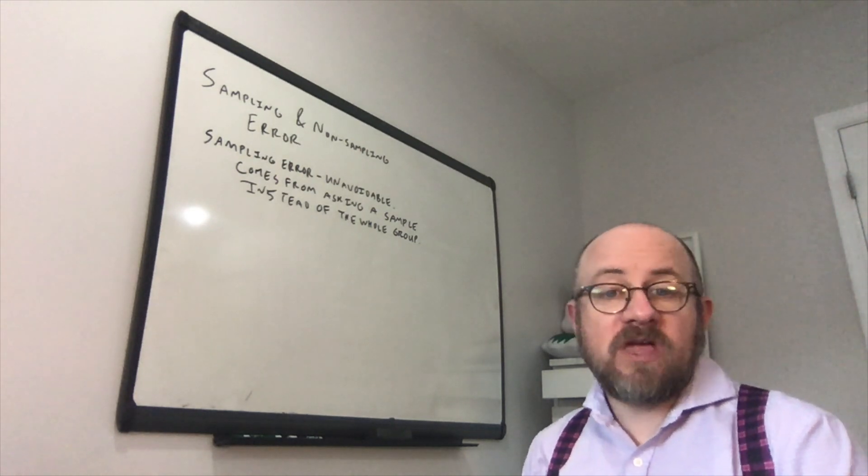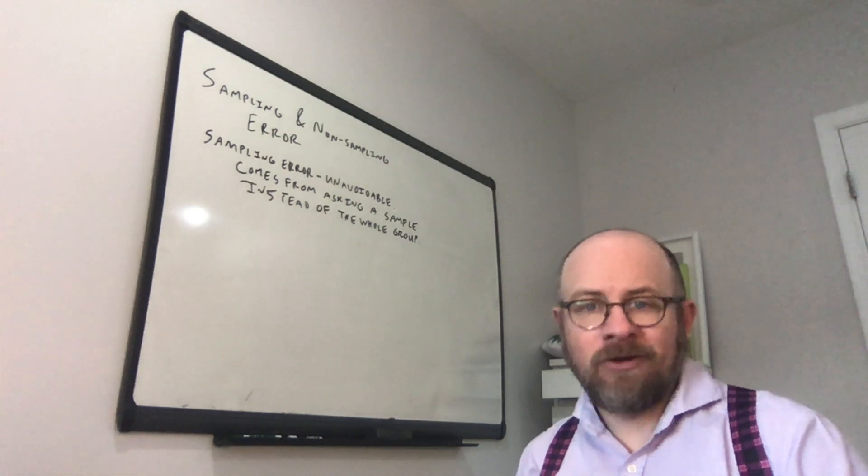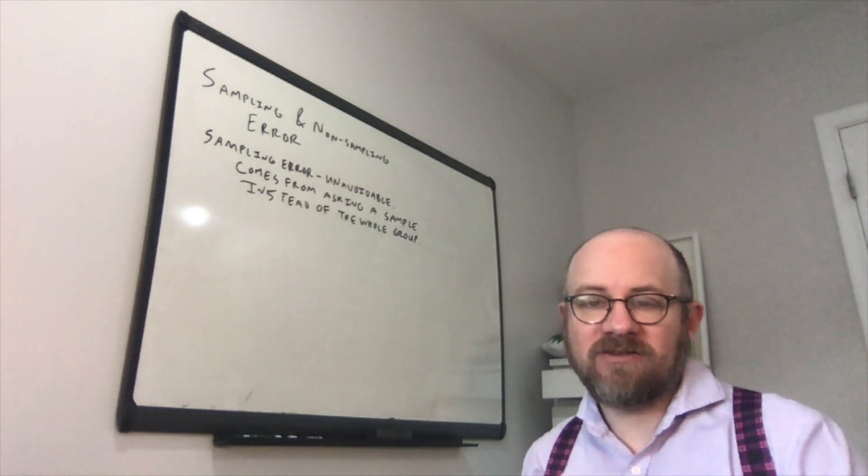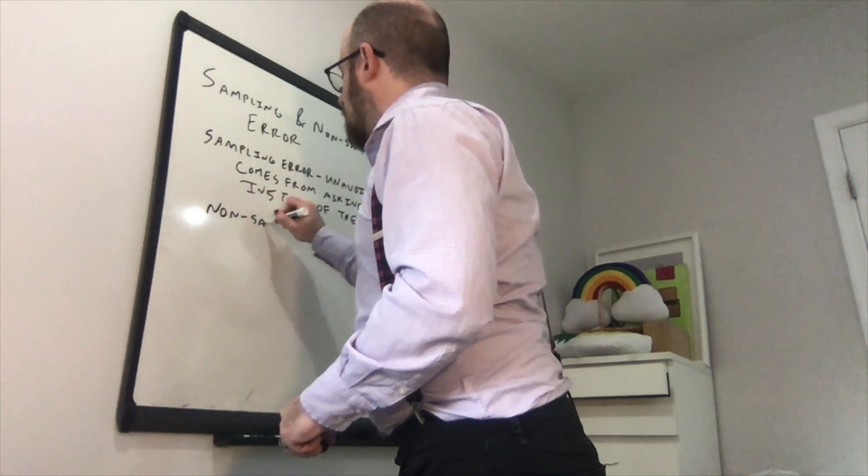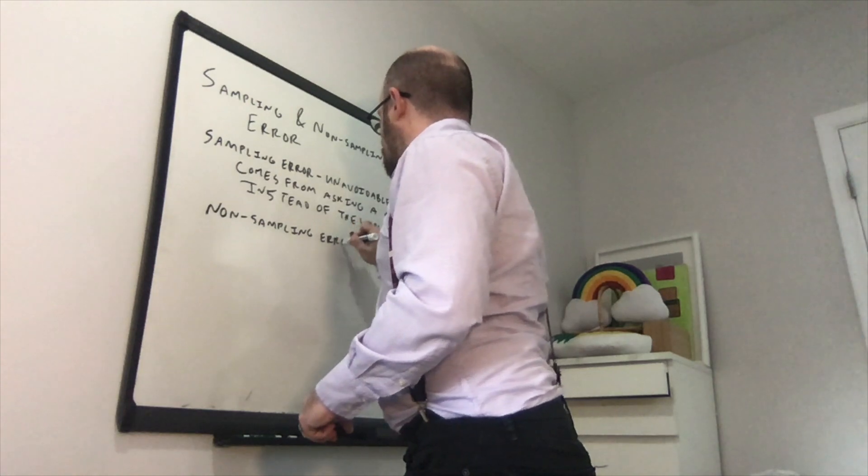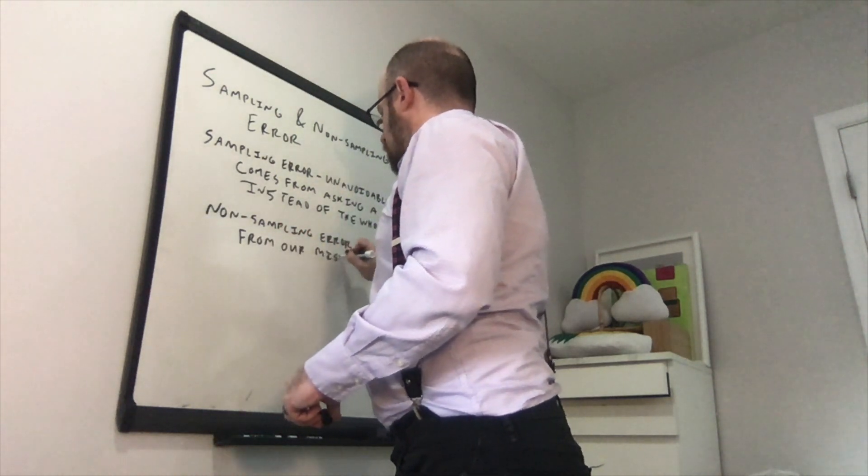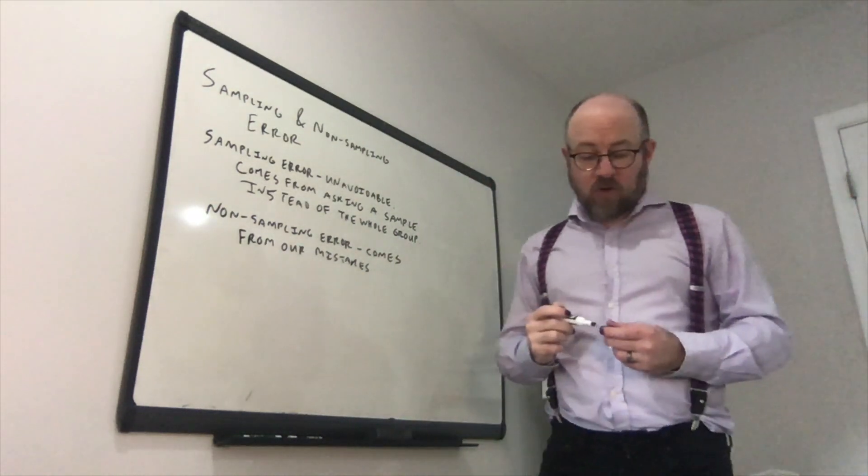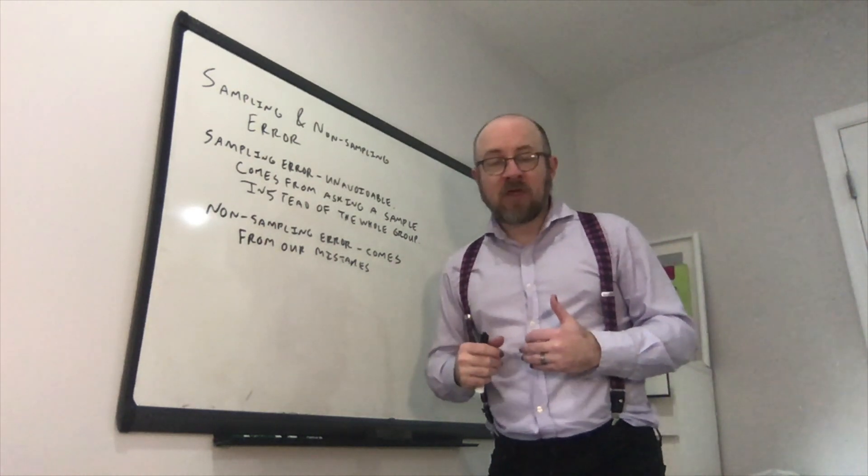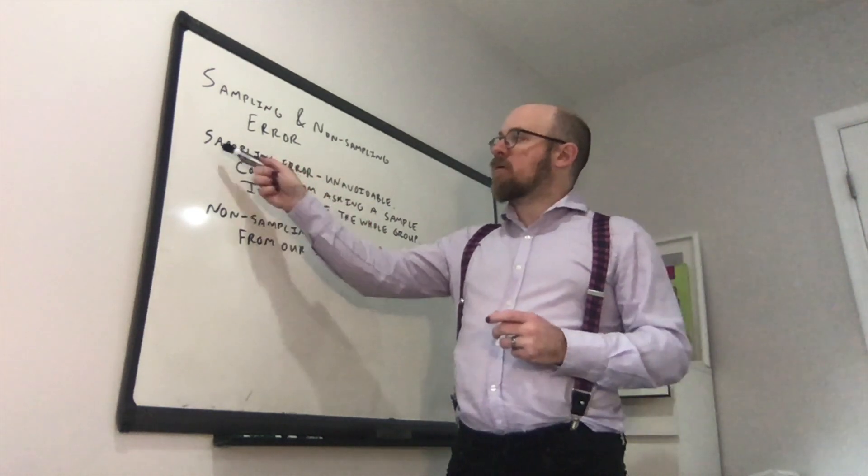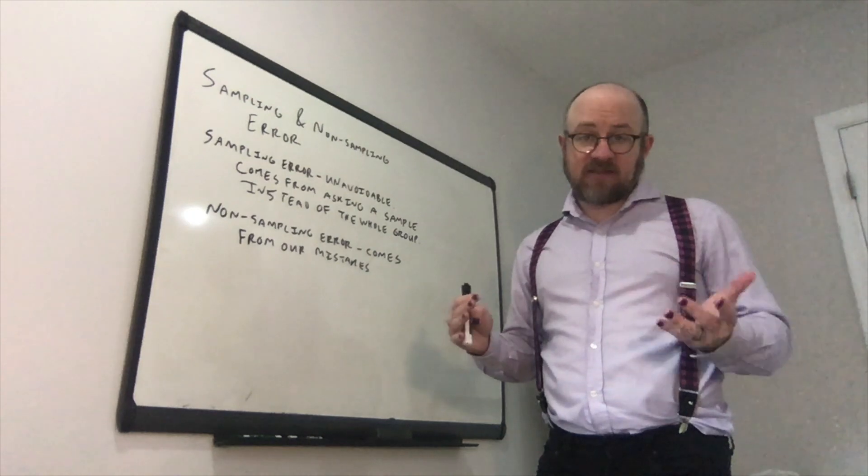Non-sampling error is the error that we get from doing things wrong. So if we make mistakes in how we ask people the question, for example, like doing a convenience sample where we just put a post up on our Instagram feed, that is called non-sampling error. Non-sampling error comes from our mistakes. So if we ask the question wrong, or if we ask the wrong people, or don't get a representative sample, all of these introduce non-sampling error. Remember, sampling error just comes from the fact that we're sampling, that we're taking a sample rather than asking everyone. Non-sampling error is any kind of error about mistakes that we make.